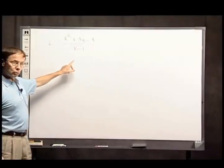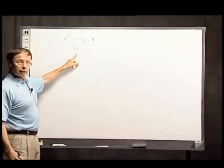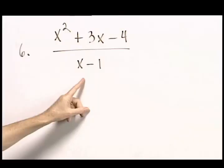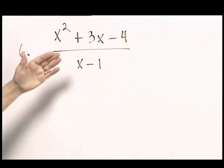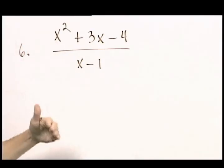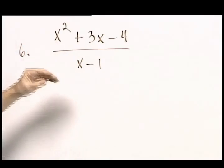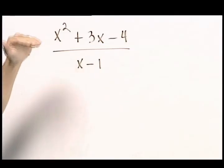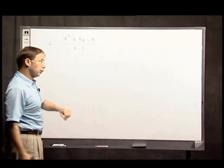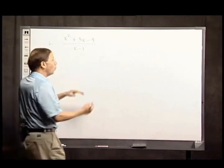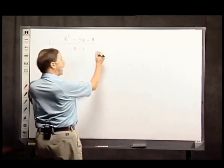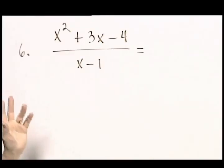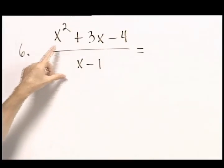I'm moving on to simplifying rational expressions. What we're looking for in simplifying this, as we are in number fractions, is there a common factor between the numerator and the denominator? It sounds like factoring is important once again, and yes there is.